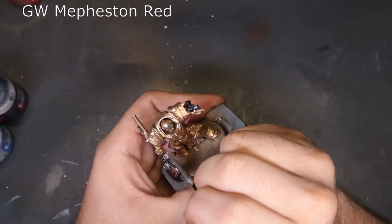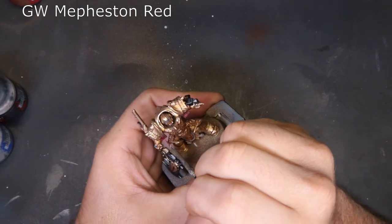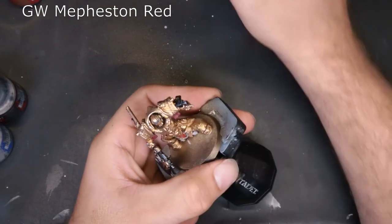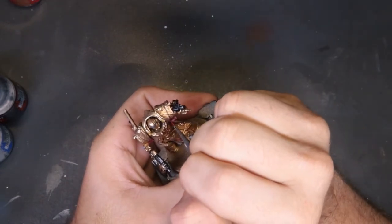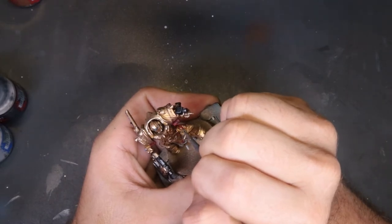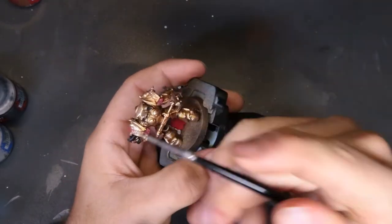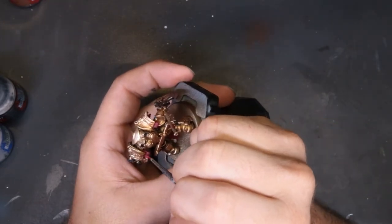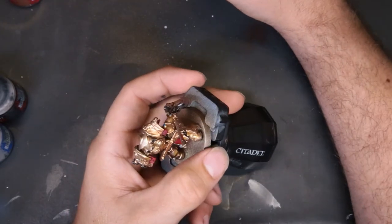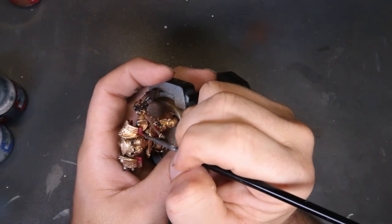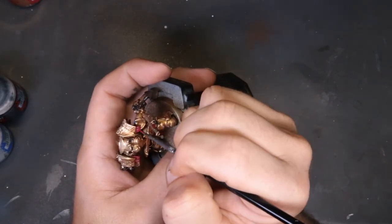All right, so now we're coming through and trying to re-highlight what we matted down with the Army Painter Dark Tone previously. We're coming back through with Mephiston Red and just trying to pick out the raised areas on the tassels and on the red parts of the model. Really, the only ones that require too much attention is just these little tassels. You can sit there and pick out some of the stuff on his loincloth, but meh, it's alright.